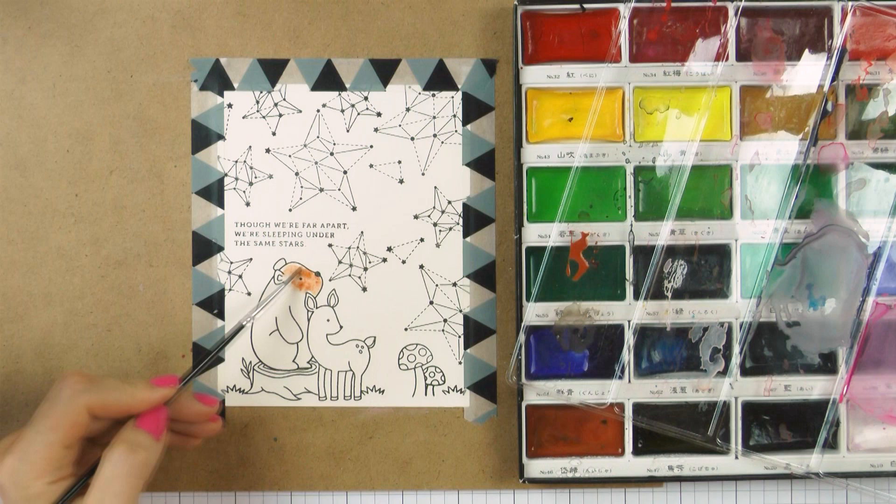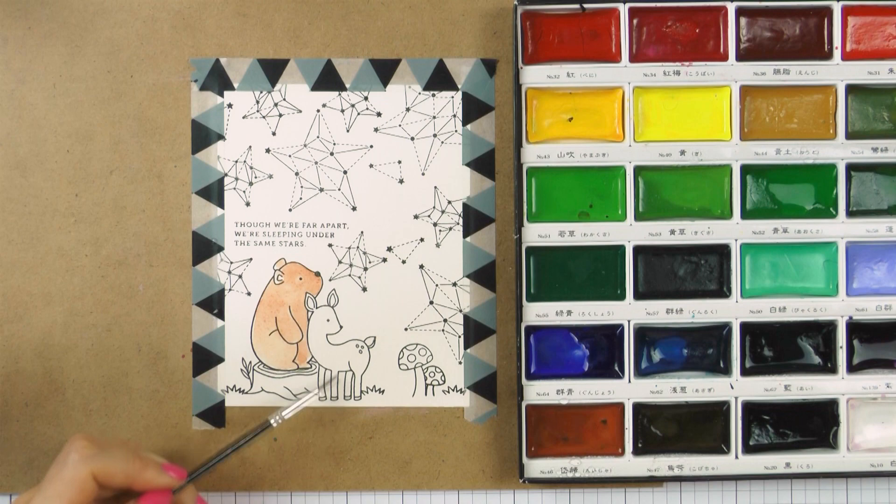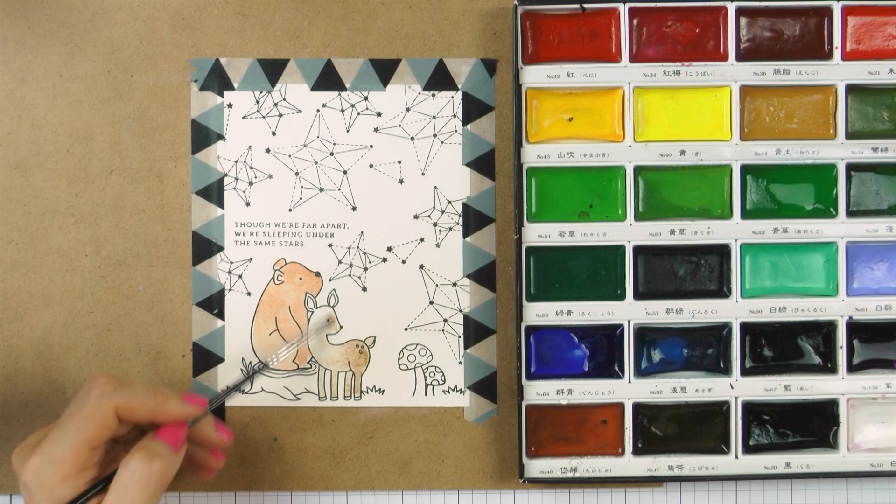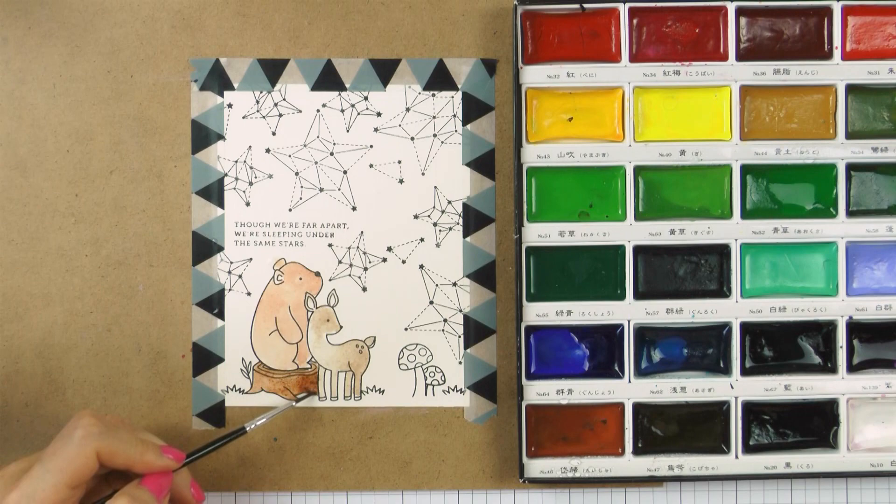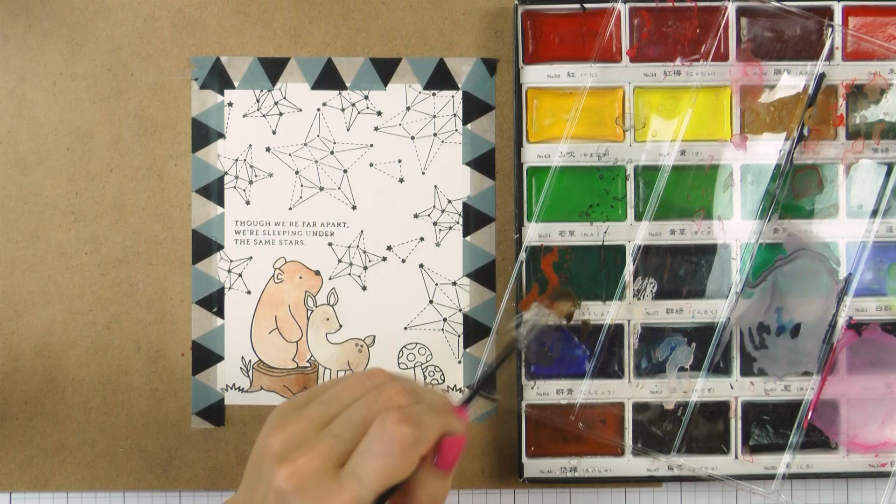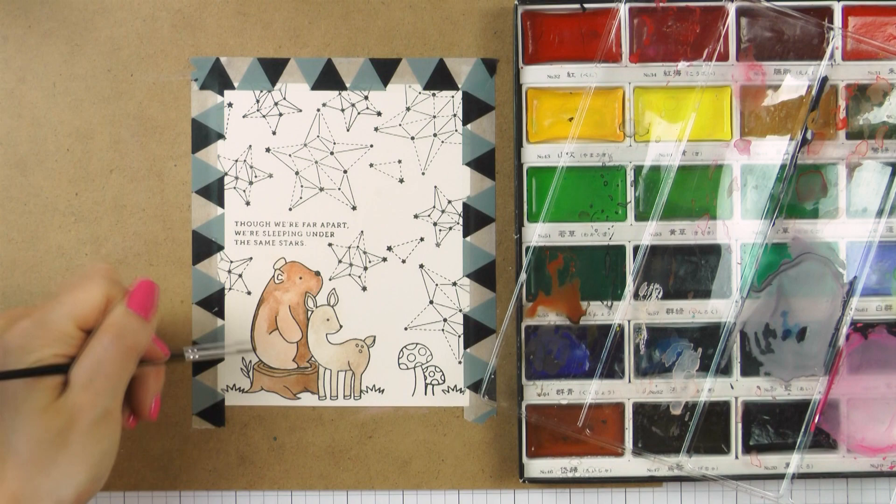For my coloring I'm using my Gansai Tambi watercolors and I'm first going to watercolor my critters. I will say that I kept being unhappy with my critter watercoloring so I later decided to use my Copic markers to add shading and detail. You can definitely combine different coloring mediums to add details and finishing touches. This coloring took quite a bit of time so this is why I am speeding it up a lot here so that the video isn't too long. I started doing my coloring using a paintbrush but later switched to a waterbrush.